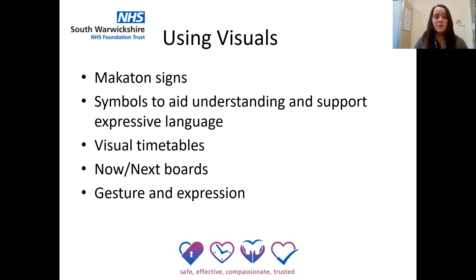Visual timetables give children an idea of what's happening throughout the session. Depending on the child's level of understanding, you could have one for the whole day or just for the morning or afternoon. This helps if you need to explain any changes to the routine, as children can physically see the changes. For example, if you're no longer going outside because it's raining, you could take the outside symbol off and replace it with golden time. A now/next board supports children to complete activities as it's clear what's happening now and what they can expect next — this works well if the child can see what they can play with afterwards, after they've done something adult-led.